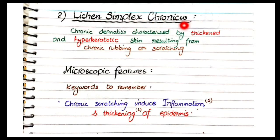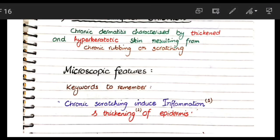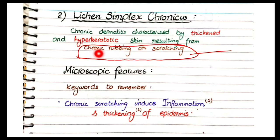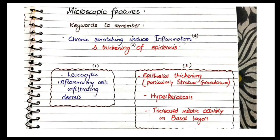Lichen simplex chronicus is defined as a chronic dermatitis characterized by thickened and hyperkeratotic skin resulting from chronic rubbing or scratching. It typically develops secondary to some other chronic inflammatory condition that causes pruritus or itching. In response to the damage caused by chronic rubbing or scratching, the affected area of skin becomes thickened and hyperkeratotic as a protective response.